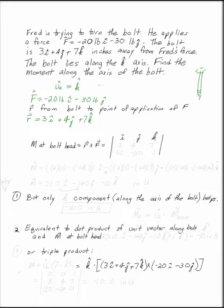And the moment at the bolt head is R cross F. R goes on top, so we've got 3, 4, 7 on the top, minus 20, minus 30, and 0 on the bottom. Go ahead and do the cross product. This gives us the moment at the head of the bolt.